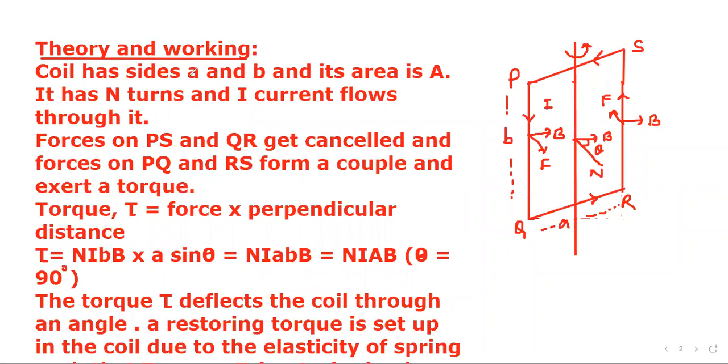Now theory and working. The coil has sides a and b. Here PQ equals b and QR equals a. Similarly RS will be b and PS will be a, and it has area A equal to a times b. Now it has N turns and current I flows through it.